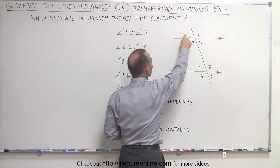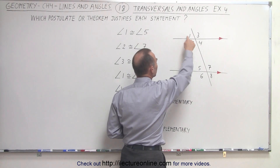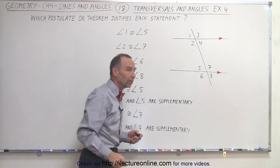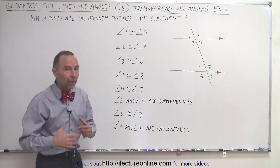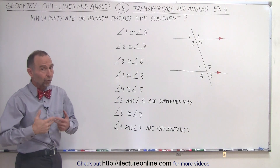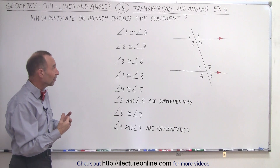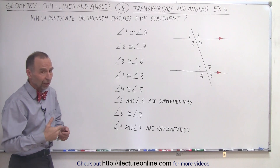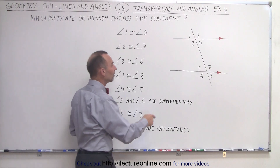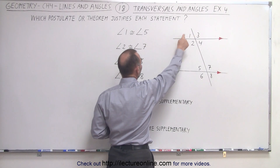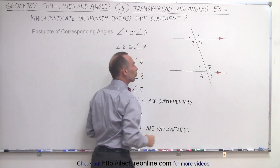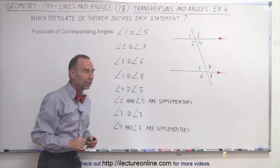Here's angle one and here's angle five. Notice that these are what we call corresponding angles, and the postulate of corresponding angles tells us that if they're corresponding, then they must have the same measure — therefore they are congruent. So we can make this first statement because we know the postulate of corresponding angles.